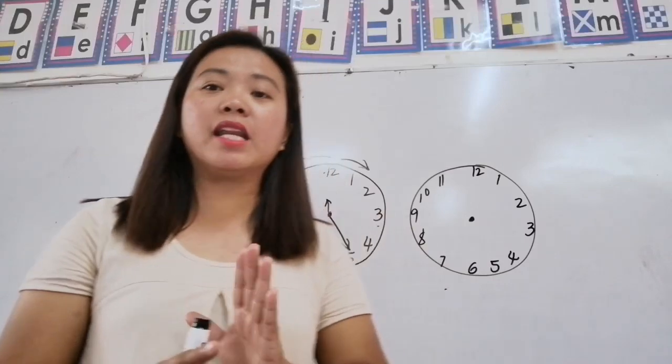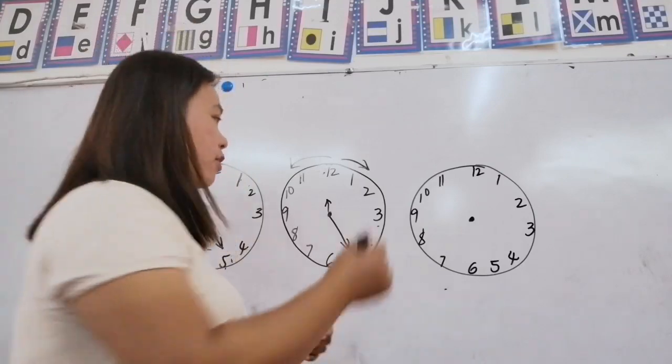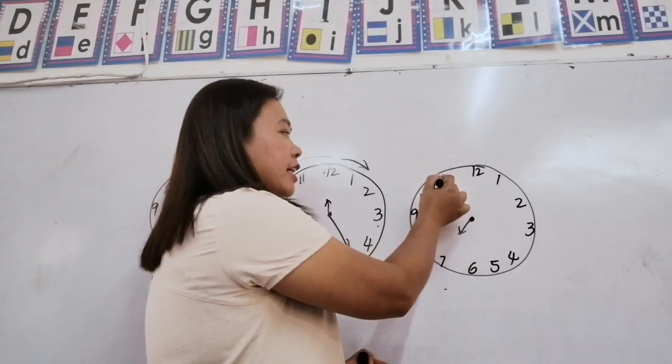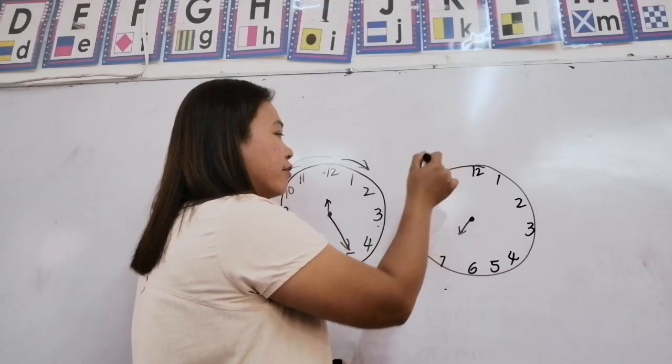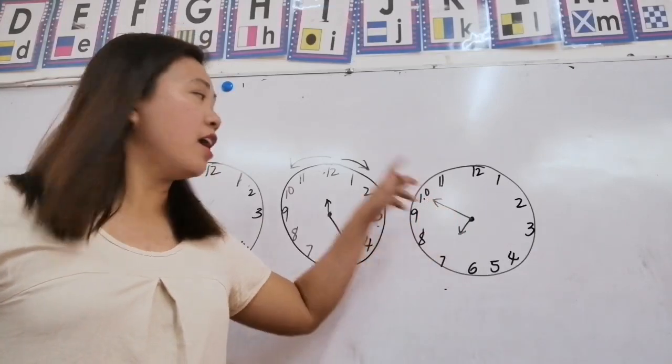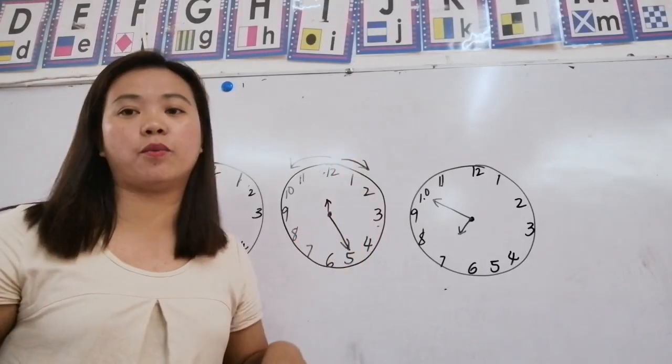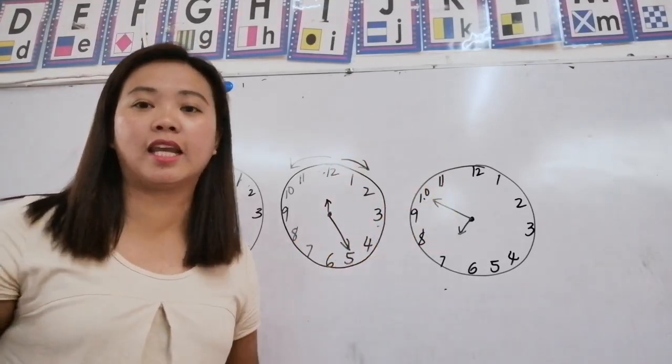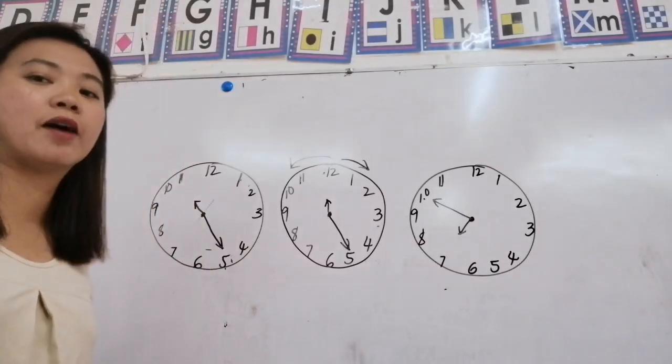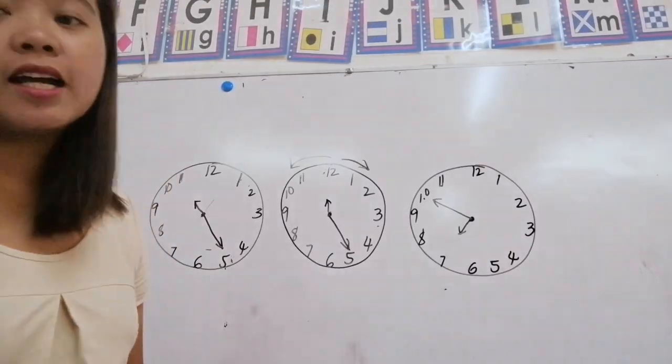Now let's use before. 10 minutes before 7 o'clock. Put your short hand now in 7. And for you to get the 10 minutes before, start counting in 11. 5, 10. So your long arrow will be there. This one is, after and past are the same. You're going to start counting in 1, but if it is before, you'll start counting in 11. I have some clocks there in the exam and you will be the one to put the hands of the clock.